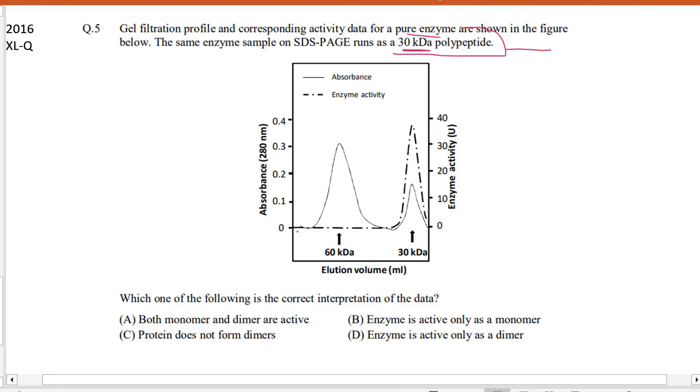But enzyme activity, if we see here, it is almost negligible in the 60 kilodalton, that is in the dimer form. There is no enzymatic activity, but in the monomer form you can see a sharp or high enzymatic activity.